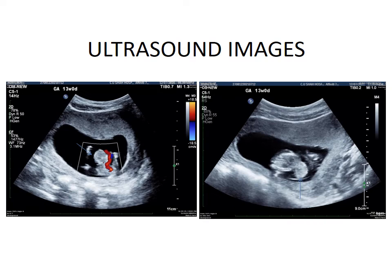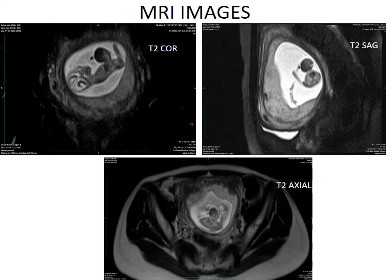In this ultrasound image, we can see the umbilical cord is inserted directly into the herniated pouch. Fetal MRI images show a large hernia sac protruding through the ventral wall of the abdomen, with liver and small bowel elements seen in the sac covered by a thin membrane.